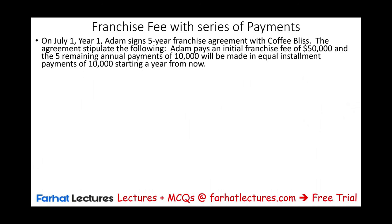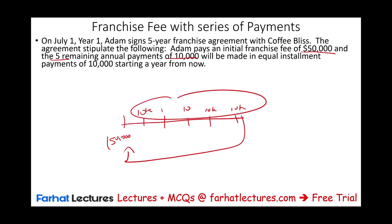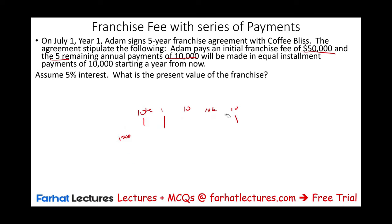Now let's change the scenario. On July 1st, Adam signs a five-year franchise agreement with Coffee Bliss. The agreement stipulates that Adam pays $50,000 upfront and five remaining annual payments of $10,000 starting a year from now — totaling $100,000. Since we have payments, we have to discount them to present value. We'll assume an interest rate of 5%, so the present value equals $50,000 plus the present value of $10,000 annuity over five periods at 5%. Going to the time value of money table, the factor is 4.3303, giving a present value of the payments of $43,303.50. Therefore, the franchise rights intangible asset is recorded at $93,303.50.